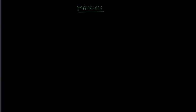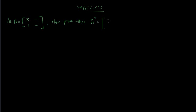We'll take an example. If A is a matrix [3, -4; 1, -1], then you have to prove that A raised to the power n is equal to [1+2n, -4n; n, 1-2n], where n is any positive integer.